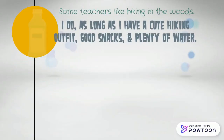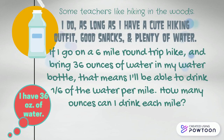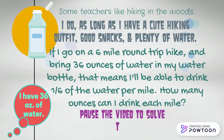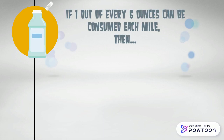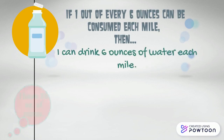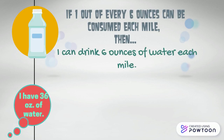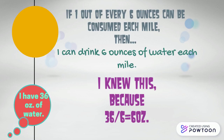If I go on a six-mile round-trip hike and bring 36 ounces of water in my water bottle, that means I'll be able to drink one-sixth of the water per mile. How many ounces can I drink each mile? Pause the video to solve this. If one out of every six ounces can be consumed each mile, then I can drink six ounces of water each mile, because thirty-six divided by six equals six ounces.